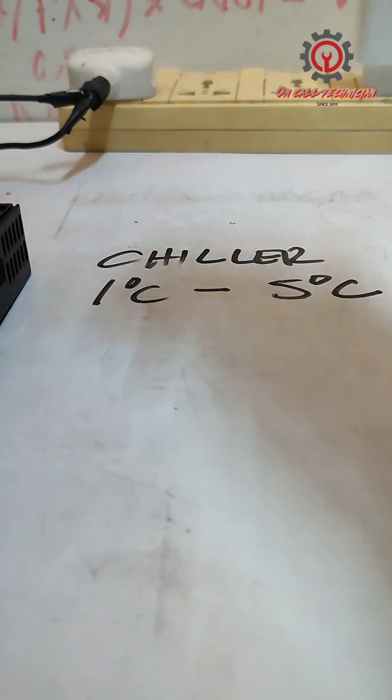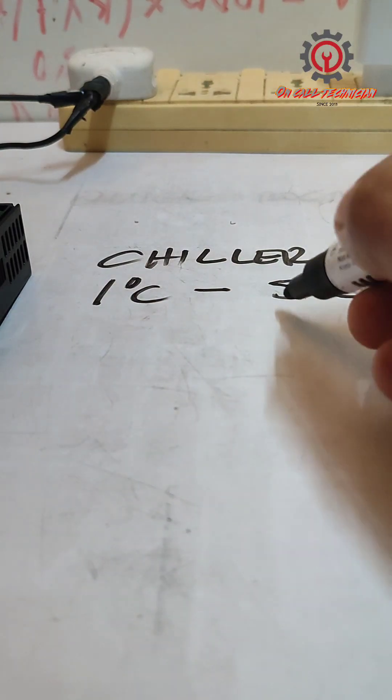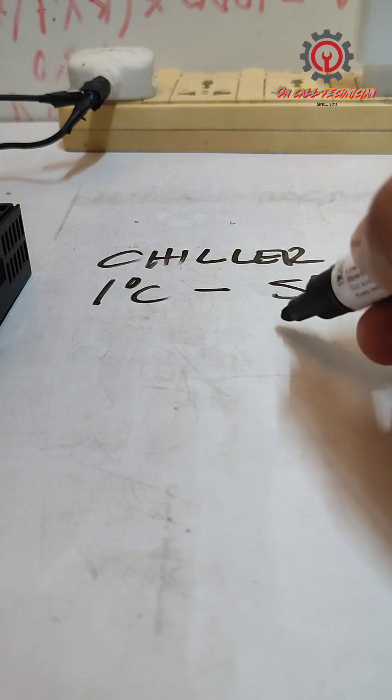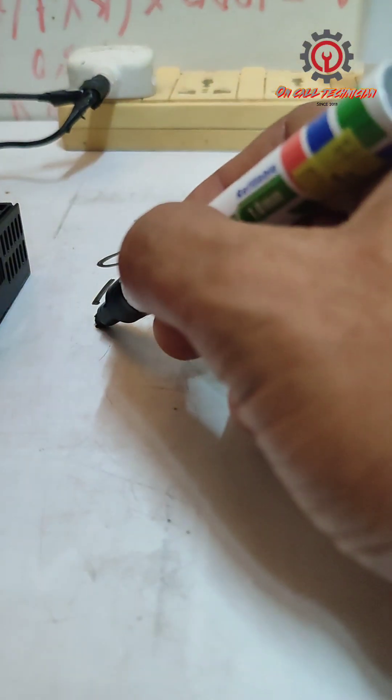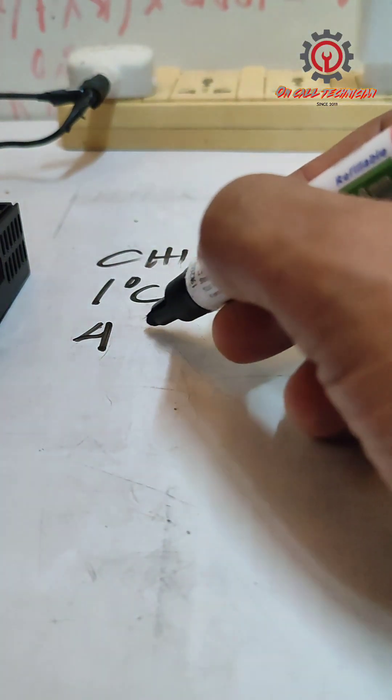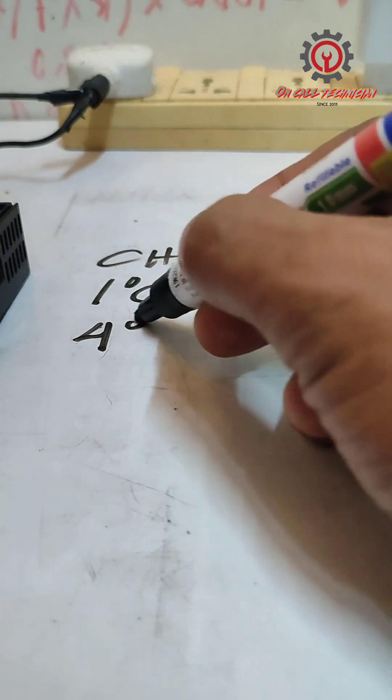We're going to subtract: 5 minus 1 is 4. Therefore, this 4 is our differential.